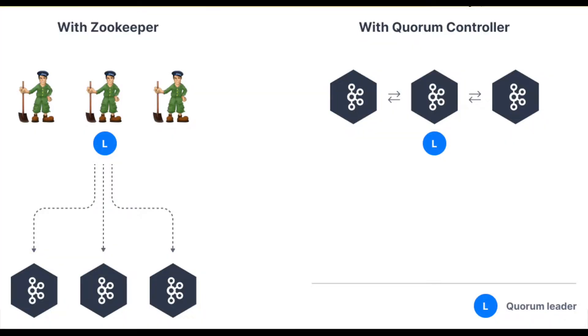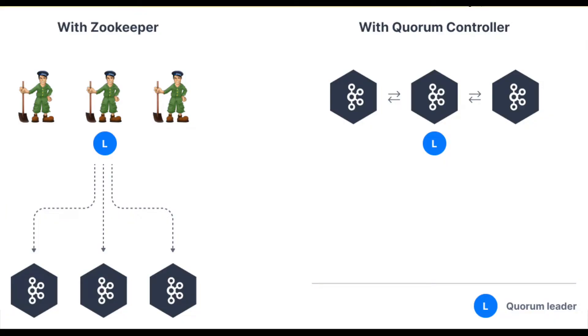Hey guys, welcome to the new video. In this video we are going to set up Kafka in KRaft mode. Apache Kafka is a distributed streaming platform and it is the foundation of many event-driven systems. It allows applications to produce and consume events on various topics with a built-in fault-tolerant mechanism.